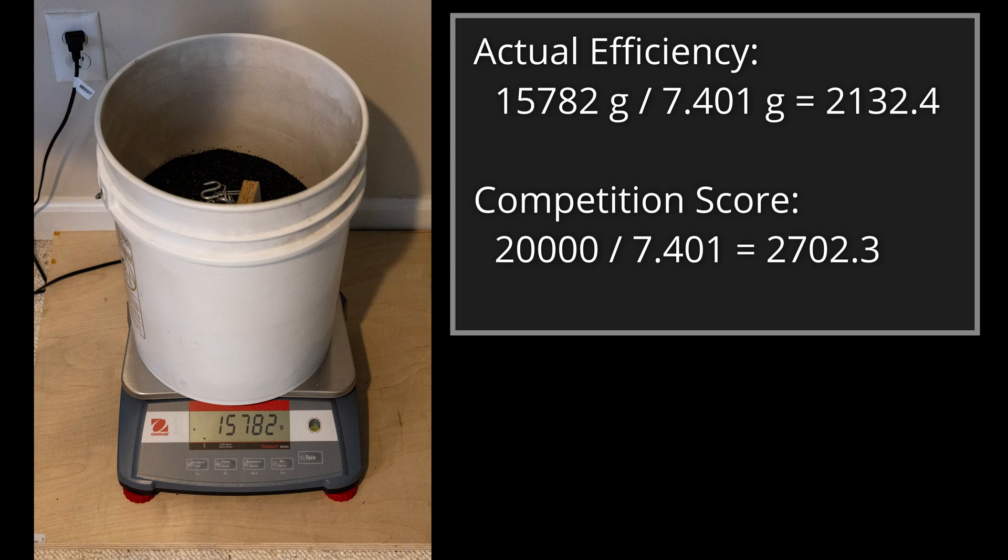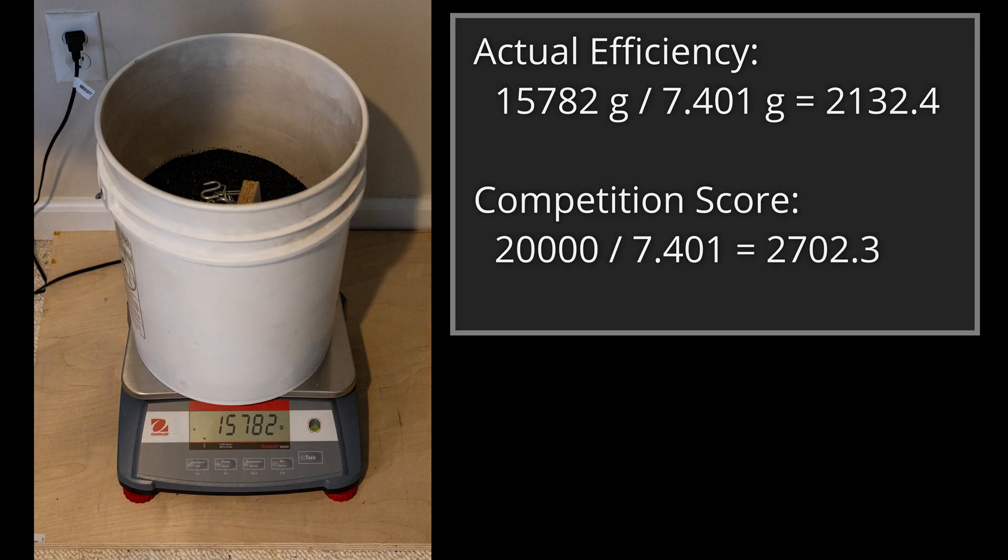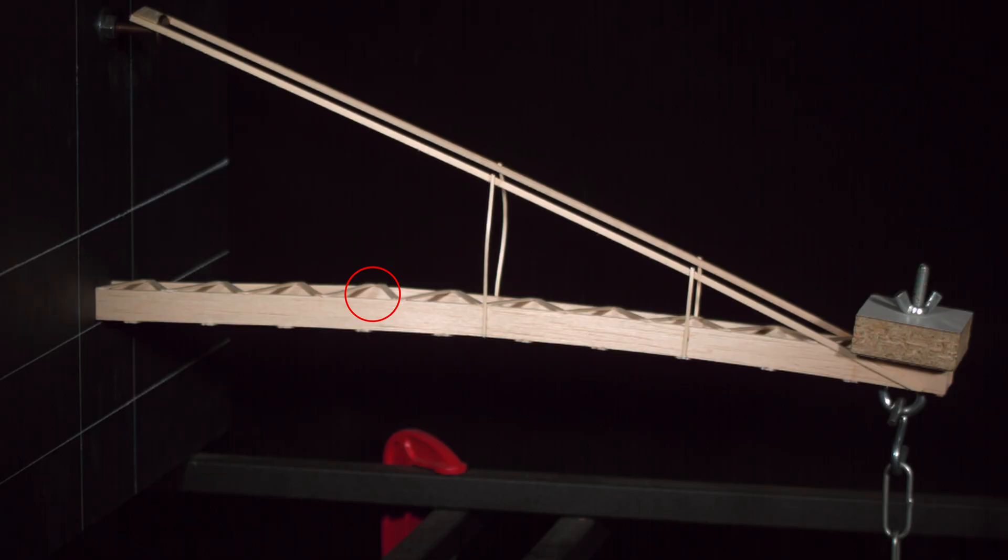It did its job and held over 15 kilograms. The actual efficiency was 2132.4 and more importantly, the competition score is a very impressive 2702.3. The back compression beam fails first with this build, but there is no need to try and make it stronger as we already have a result that holds over 15 kilograms.